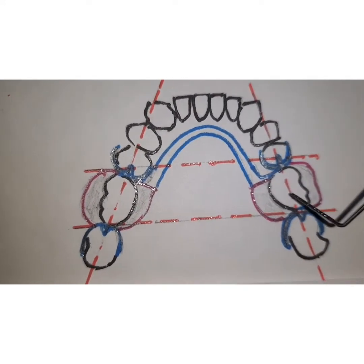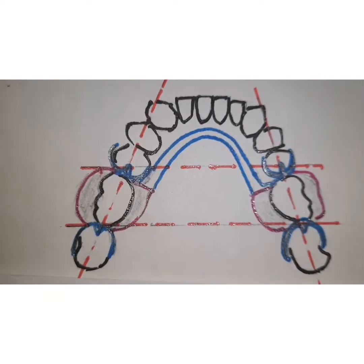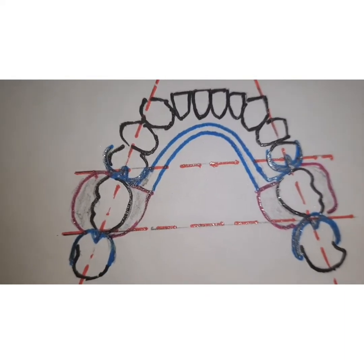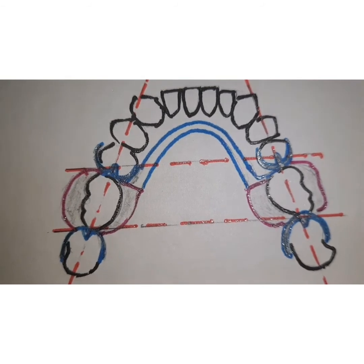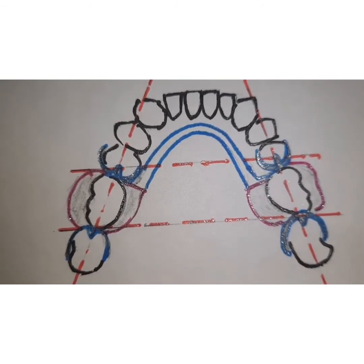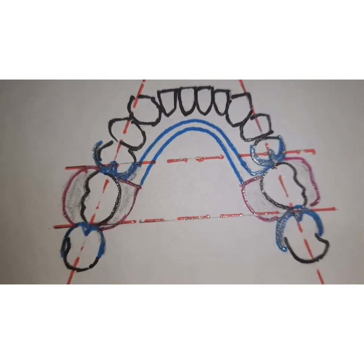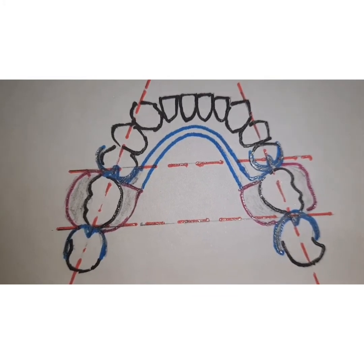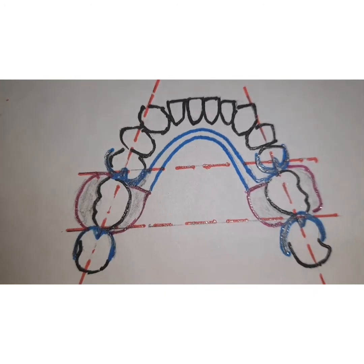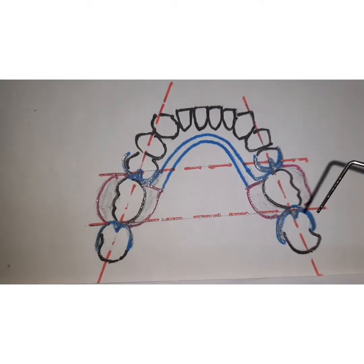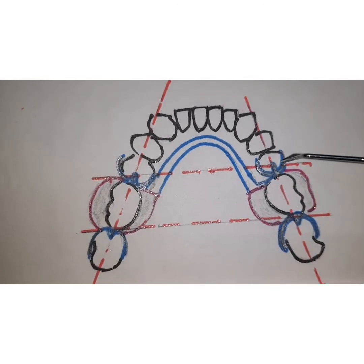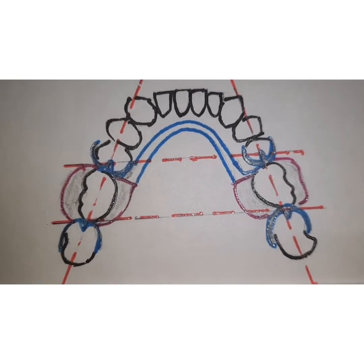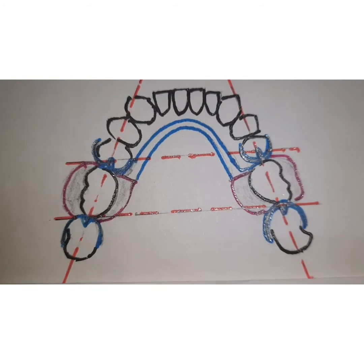What you see in the figure is class 3 modification 1. When we talk about design considerations, the first thing is your direct retainers. Since this is an edentulous space bounded by teeth both anterior and posterior, the retentive undercuts of the teeth are not that critical here, because stresses are borne along the long axis of the teeth and the partial denture is supported by teeth on both sides.